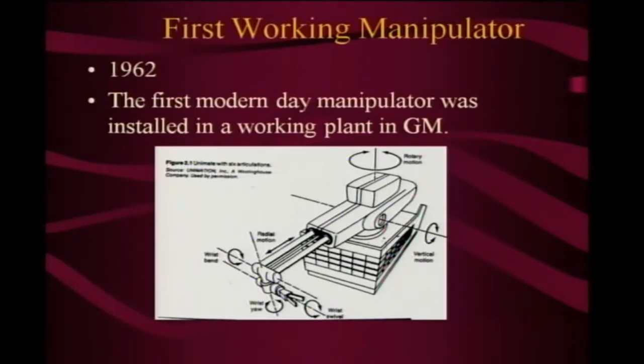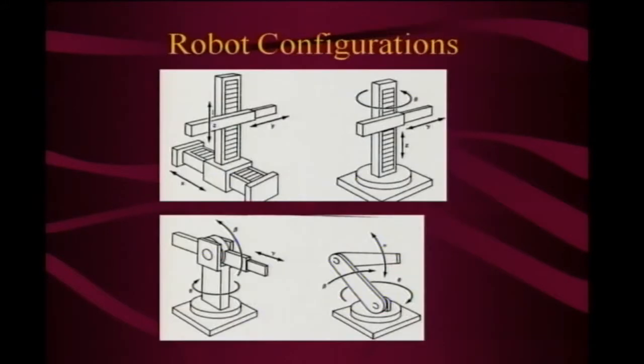1962 — and this is working, installed in a plant in the US. Then people looked at different configurations. Removing the wrist from the picture, at the wrist you always have three rotating axes for orientation. Technology is now such that you can make them coincident. The issue is positioning the wrist somewhere in space — you want it to go to any location x, y, z.